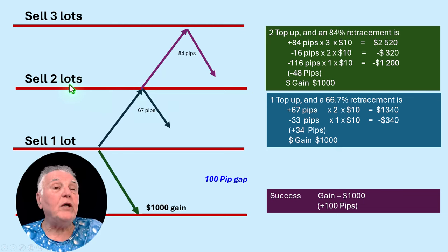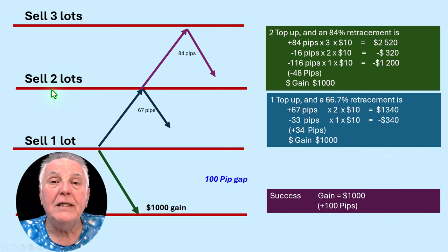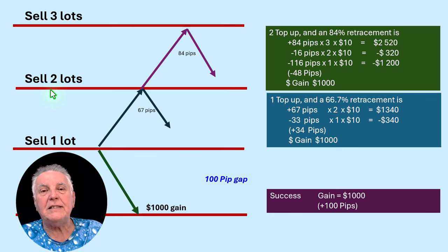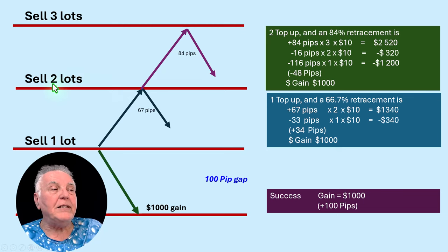This trader would enter another sell. Now they could do it at the same lot sizing, but in this example to exaggerate we're going to say that this second sell gets generated at two lots.